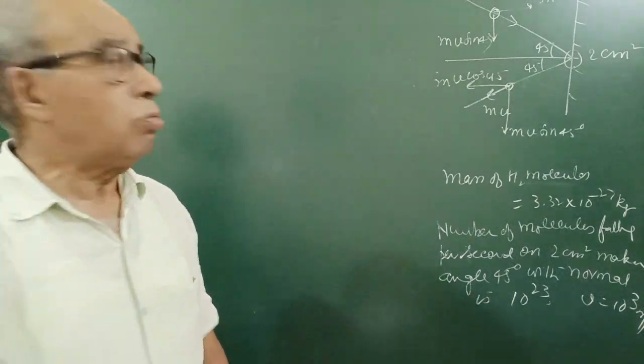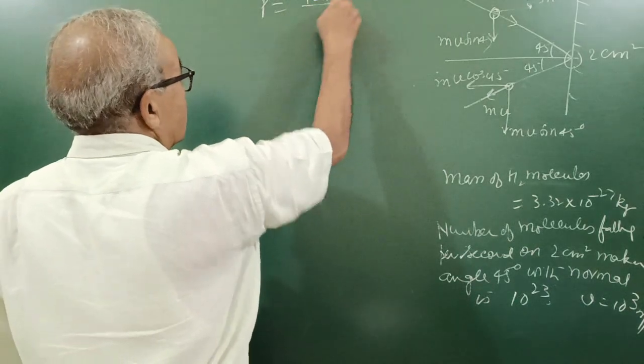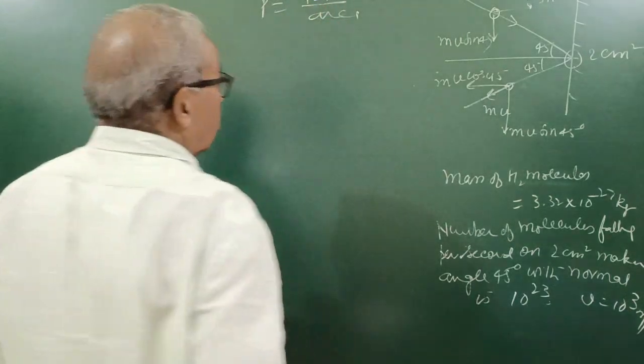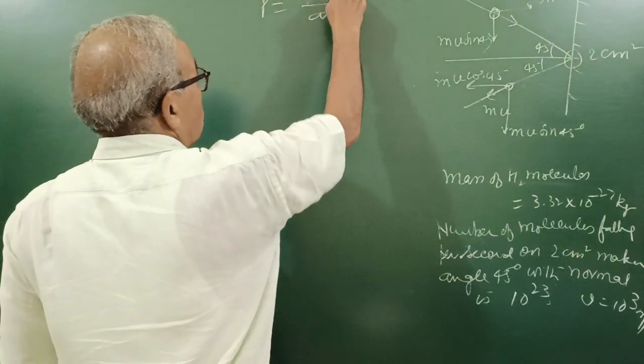Pressure is equal to, you know, force per area. And force - your normal thrust, normal thrust.